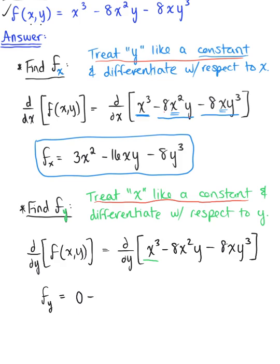The next term is -8x²y. The derivative of y is 1, so we have -8x² times 1, or just -8x². Last but not least, we have -8xy³. We're differentiating with respect to y, and the derivative of y³ is 3y², so we get -8 times 3, or -24xy².